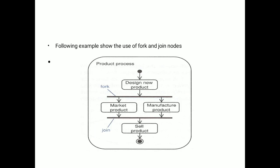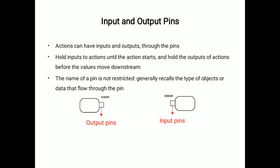In the next, input and output pins can also be shown in the activity diagram. Actions can have inputs and outputs through the pins. It holds input to action until the action starts and holds the outputs of action before the values move downstream. The name of the pin is not restricted. Generally, it recalls the type of objects or data that flow through the pin. Output pin you can see here, and input pin also you can see here.